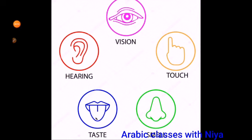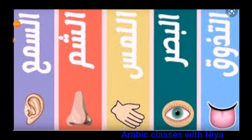Now let's identify these in Arabic, which we just learned. Let's see the answers. Al-Sammu means hearing. Al-Shamu means smell. Al-Lemsu means touch. Al-Bassaru means eyesight. And Al-Tadwuku means taste.